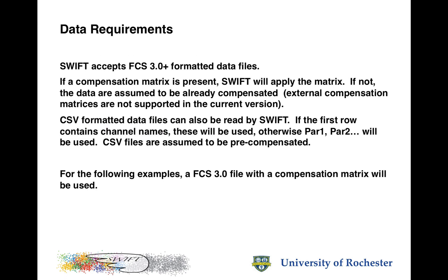The data requirements for Swift: we normally use FCS 3.0 data files. If a compensation matrix is present in that file, Swift will apply the matrix before clustering the data. If there is no compensation matrix, the data are assumed to be already compensated. At present, Swift does not support external compensation matrices, so if you would like to use one, it should be applied to the data and saved in suitable form before transferring to Swift. Swift can also read CSV data files. If the first row contains channel names these will be used, otherwise PAR1, PAR2, PAR3, and so on will be used. CSV files are assumed to have already been compensated. For the examples that follow, we'll use an FCS 3.0 file with a compensation matrix.